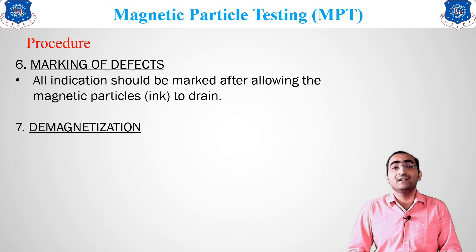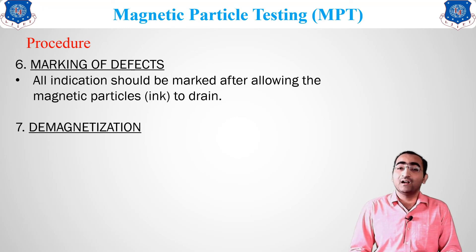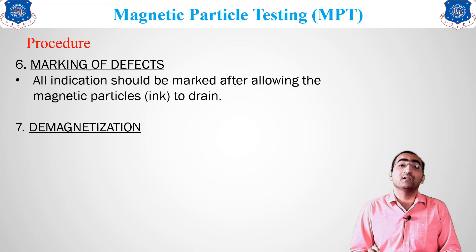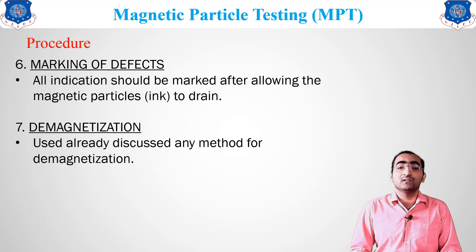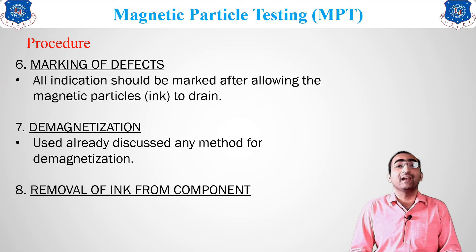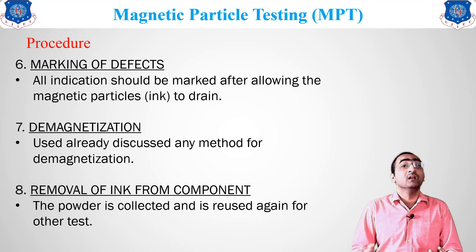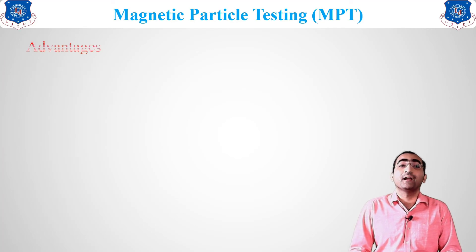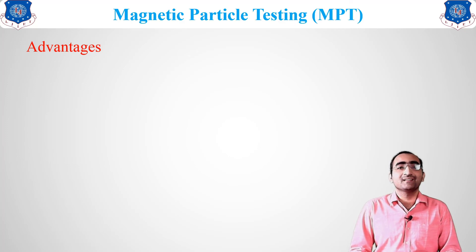Wherever there is a change in the magnetic field, mark the material with red color so that you have an indication for later reference. After that, demagnetize the material once more — whatever magnetism remains inside is removed, causing the magnetic particles to fall down. Then remove the powder from the component and collect it for reuse in other tests. This is how magnetic particle testing works.